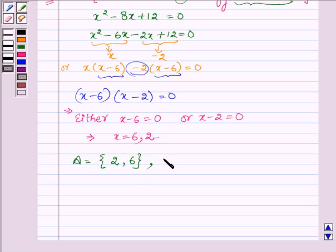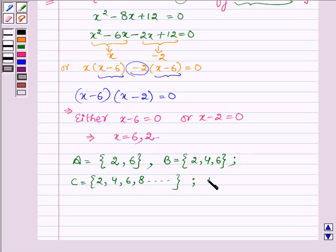Also, set B is given to us with elements 2, 4, and 6. Set C has elements 2, 4, 6, 8 and so on. And set D has only one element, that is 6.